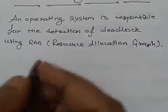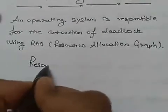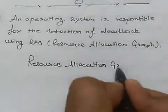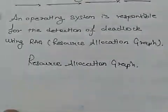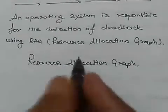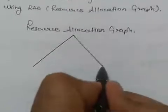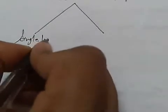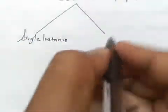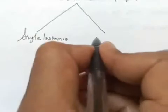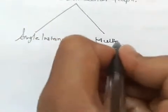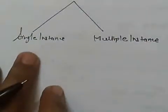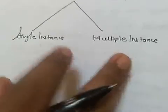In a resource allocation graph, we have two instances. First, we have a single instance and the second we have a multiple instance. Single instance means we have single resource, multiple instances means we have multiple resources.